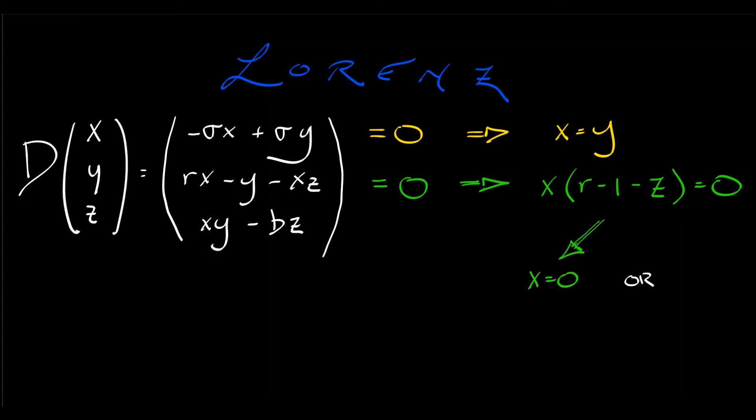or z is equal to r minus 1. With the third equation, xy minus bz equals zero, we can again substitute in y equals x, and we can solve for x as being plus or minus square root of b times z.